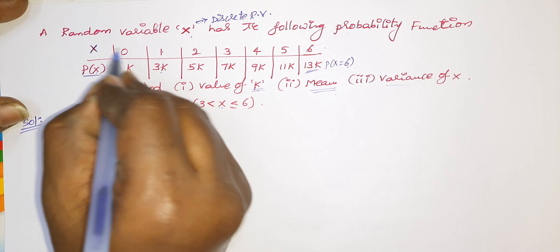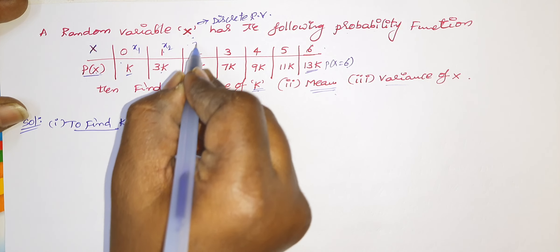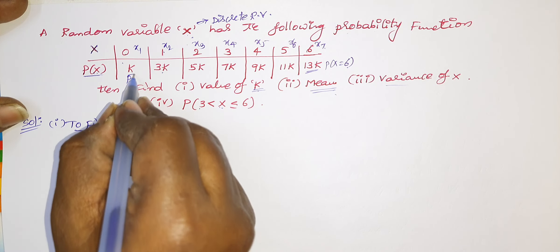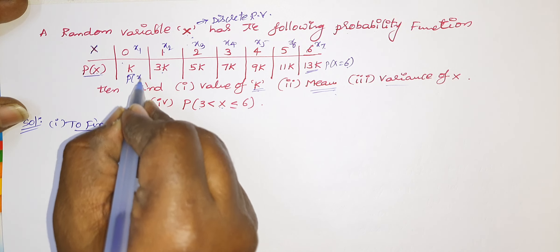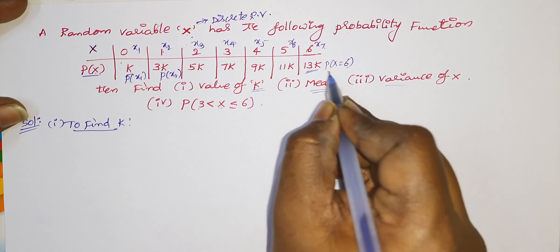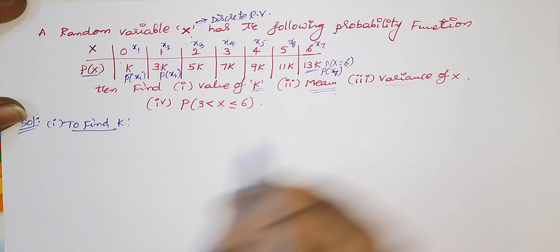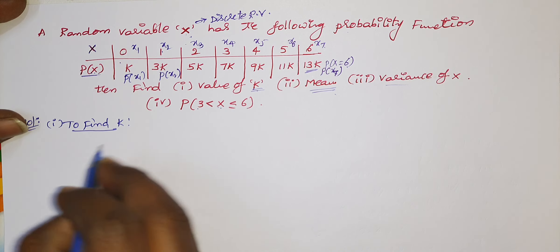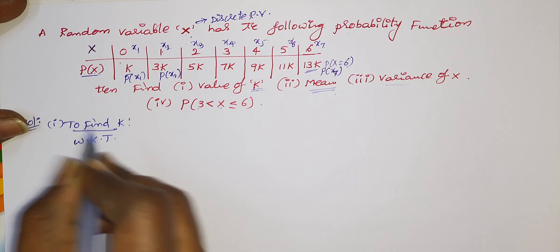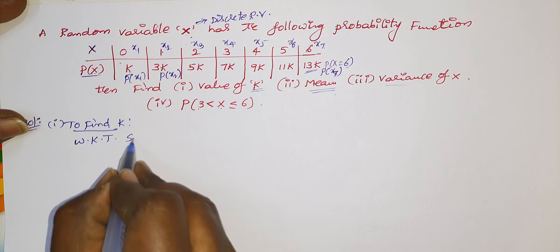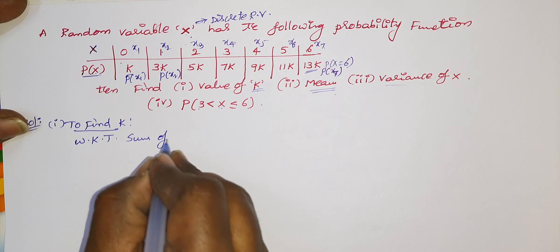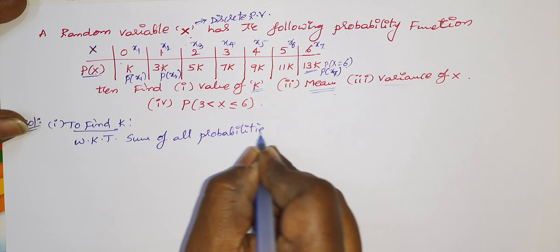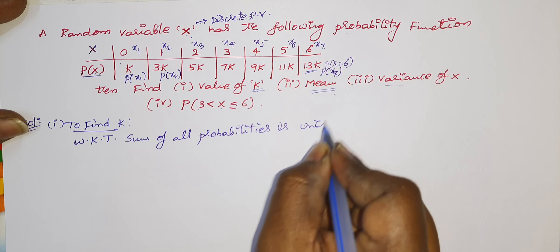Also, we have to find out the probability that x value should lie between 3 and 6 and x may equal to 6. See one by one, I will solve all problems here. Better to keep the calculator at our place. So, solution. You can give the names for the x values. This is x1, x2, x3, x4, x5, x6, and finally x7. Similarly, this is probability of x1 and this is probability of x2 and so on. This is probability of x7.